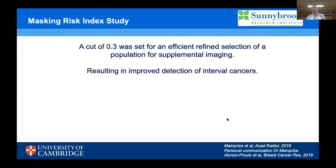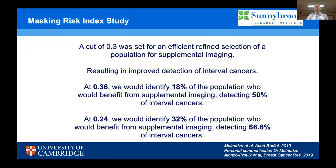When planning this study, we set a cutoff threshold for the masking risk index — which ranges from 0 to 1 — at 0.3. This was chosen based on previous studies looking into the feasibility of a risk-stratified breast screening program using the masking risk index at Sunnybrook Research Institute. A cutoff of 0.36 would identify 18% of the population who would benefit from supplemental imaging to detect 50% more interval cancers. Reducing the threshold to 0.3 identifies more women who would benefit from supplemental imaging, detecting more interval cancers.